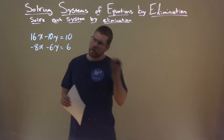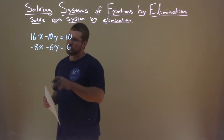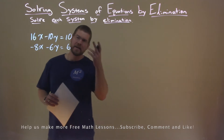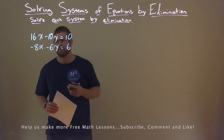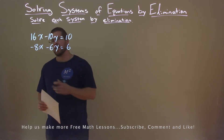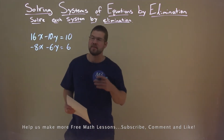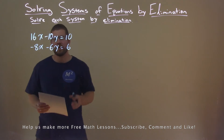We're given this system: 16x minus 10y equals 10, negative 8x minus 6y equals 6, and we have to solve it by elimination.